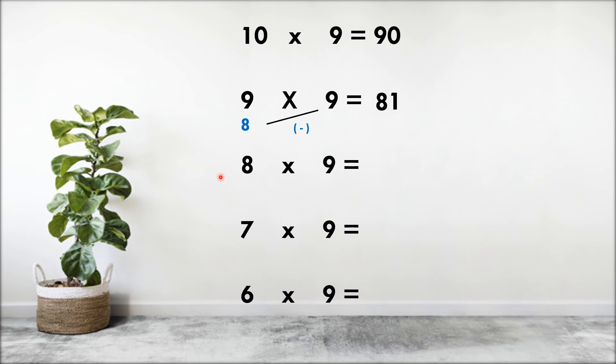Next is 8 into 9. Predecessor of 8 is 7, 9 minus 7 is 2, so 8 nines are 72. If you add 7 plus 2, we again get 9.